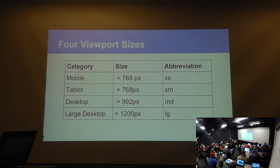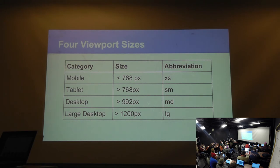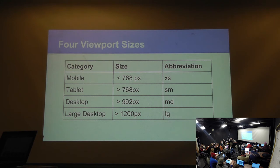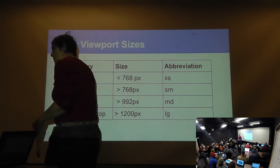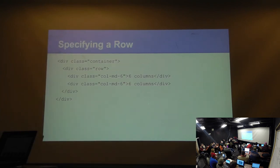The column naming convention is: col-[viewport]-[number]. So if I want three Bootstrap columns that display on mobile, that's col-xs-3. The abbreviation for extra small is xs. It is col-dash-viewport-size-dash-number-of-columns. MD means medium, and it's for the desktop viewport. This is confusing because it's not detecting you're on mobile — it's the width of your browser that determines which one shows up.